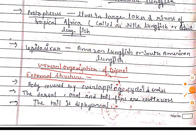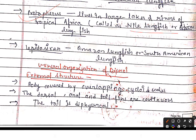The next genus is Protopterus. It is found in large lakes and rivers of tropical Africa, mostly the Nile River. It is called the Nile lung fish or African lung fish.